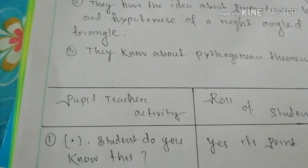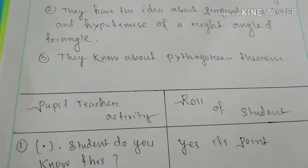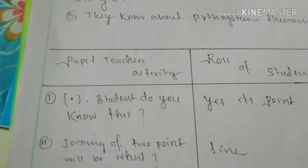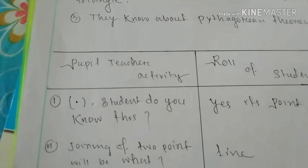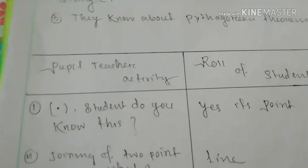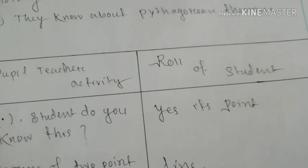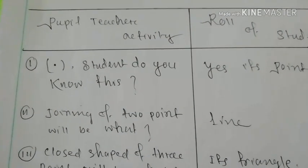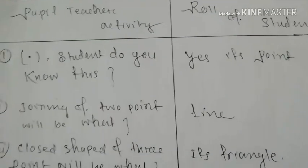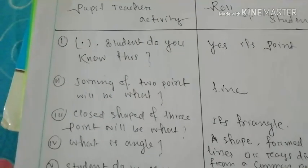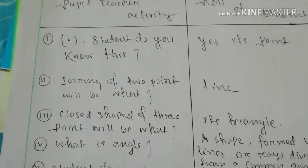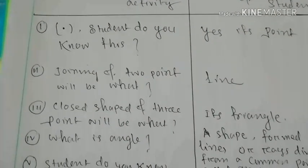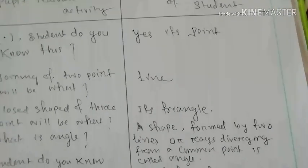After that you have to write the activity and goal of the student. Number one, the teacher draws a point and asks the student, 'Do you know this?' The student will say, 'Yes, it's a point.' Number two, joining of two points will be a line. Number three, the closed shape of three points will be a triangle, and the student will tell it's a triangle.